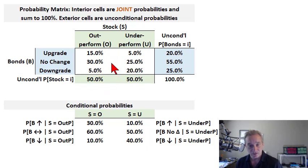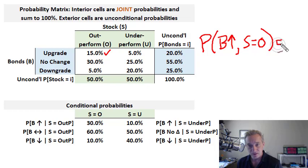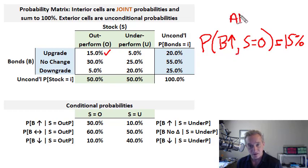The white space here is a probability matrix by definition, because these are joint probabilities. For example, the 15% we could write as the joint probability that the bond upgrades — I'll use an up arrow for that — and the stock outperforms, S equals U. That cell is 15%. The key with joint probability is that the keyword is 'and,' not 'or' — these jointly happen.